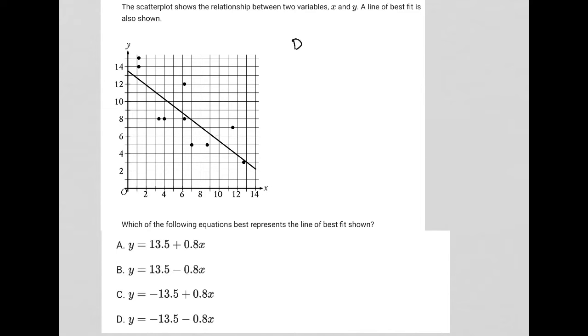This question is a diagram question. Any question where the test provides some visual input, I'm going to call a diagram question. What we have here is a scatter plot with a line of best fit. The instructions tell us it shows the relationship between two variables, x and y.